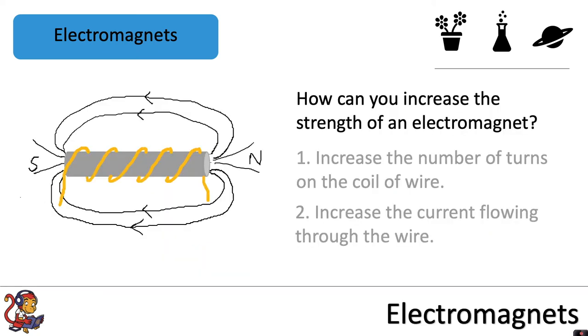The third thing you can do is add an iron core. In the image you can see inside the coils of wire we've now placed a solid iron core, and that increases the strength of the electromagnet.